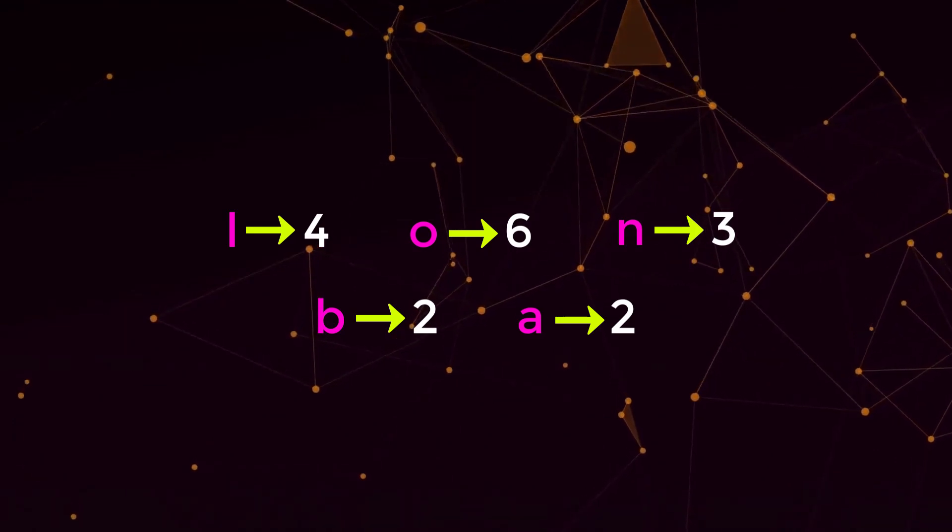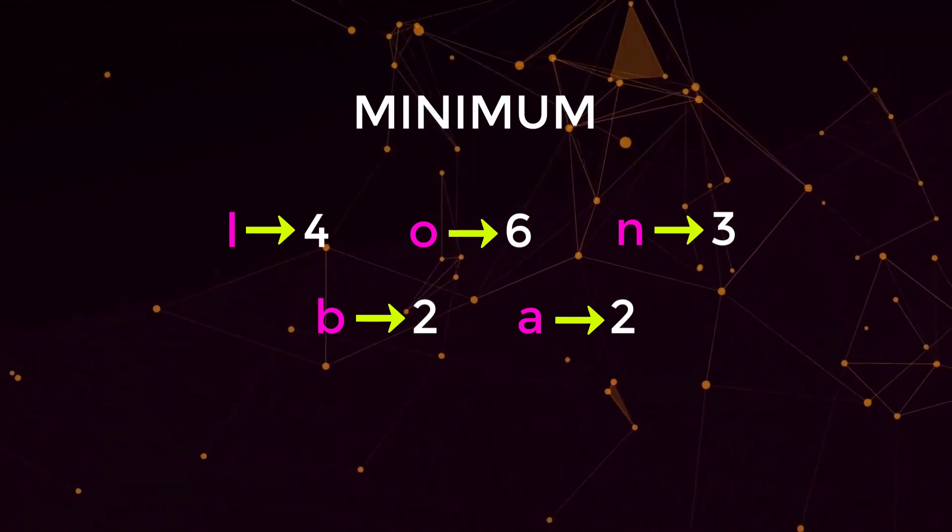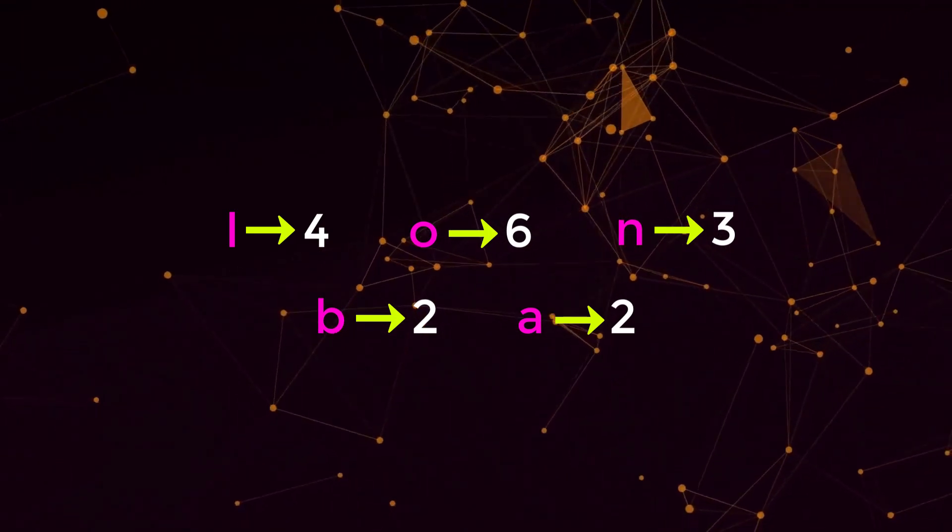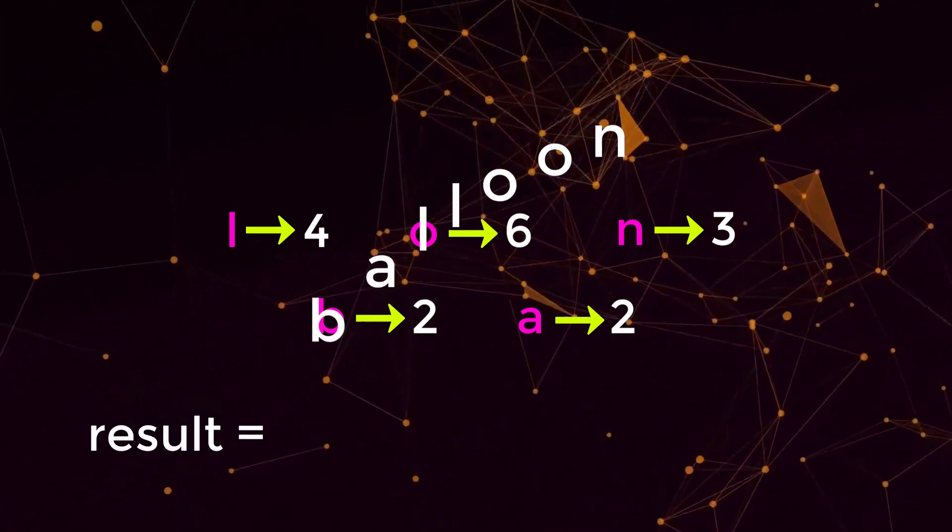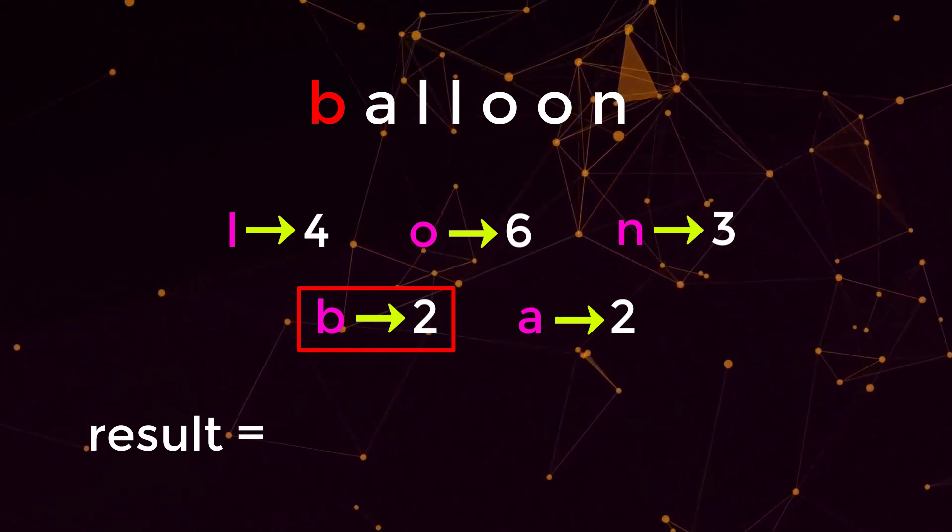In order to find the number of words that we can make up, we just need to grab the minimum count of these characters at each index. It has to be the minimum because if we don't have all the characters to make up the word, then we can't count it. So first we're going to start off with character b. That is at index one, and it has a value of two.